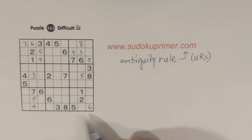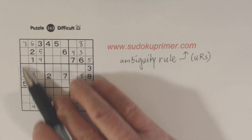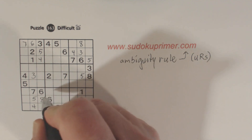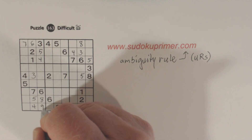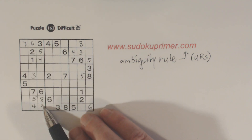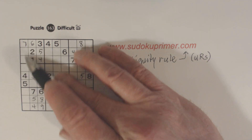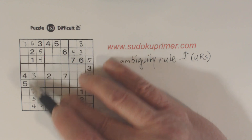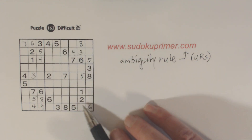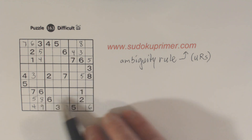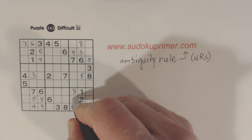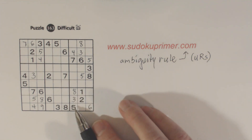We also have ghost eights here and an eight here, so we know that's an eight, and therefore that's a nine because we have ghost nines — so that has to be a nine. We have eight-nine twins there and eight-nine twins there. With this eight, we can fill in the three-eight twins and solve them.